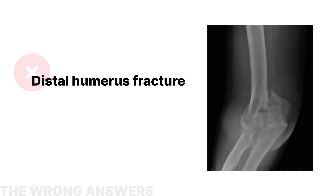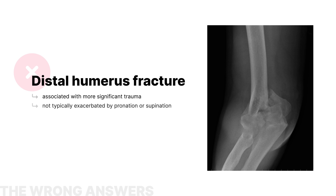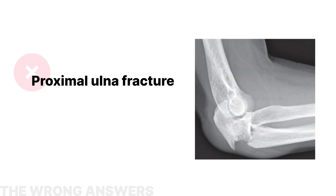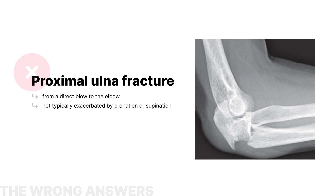A distal humerus fracture, often associated with more significant trauma, would cause severe elbow pain, swelling, and an inability to move the elbow. Pain from this type of fracture is not typically exacerbated by pronation or supination. Lastly, a proximal ulna fracture usually results from a direct blow to the elbow and wouldn't specifically cause pain with forearm rotation.